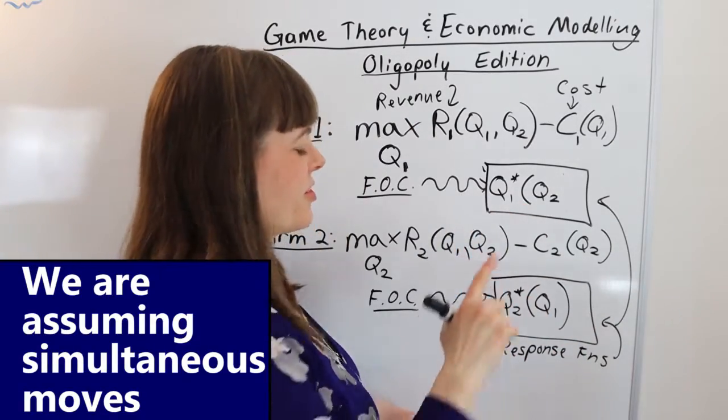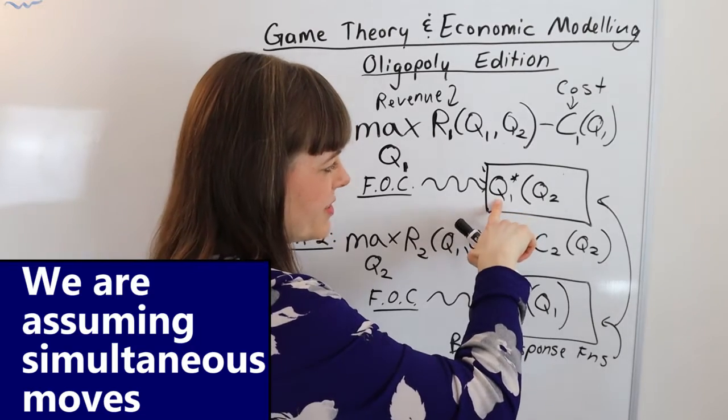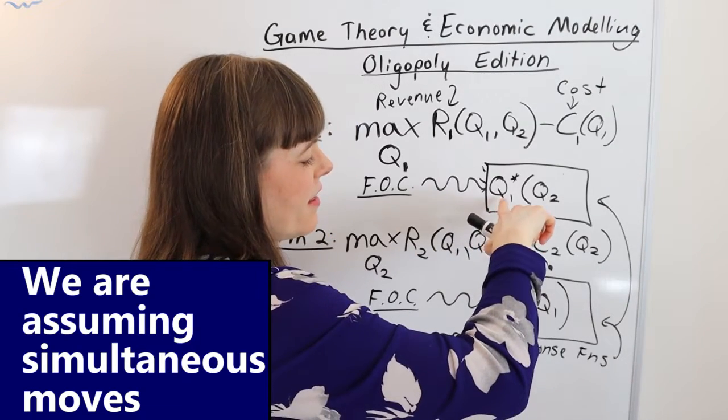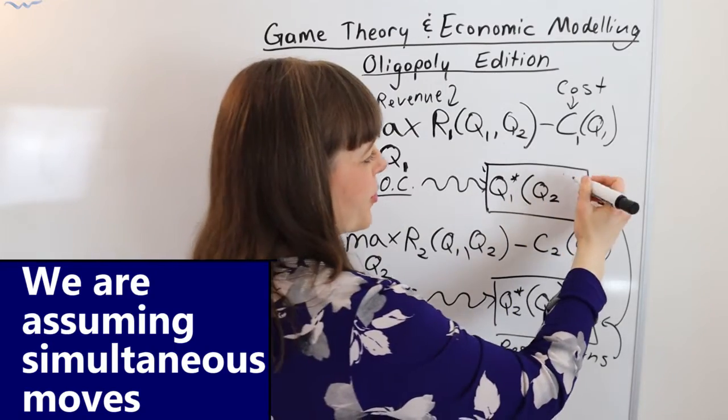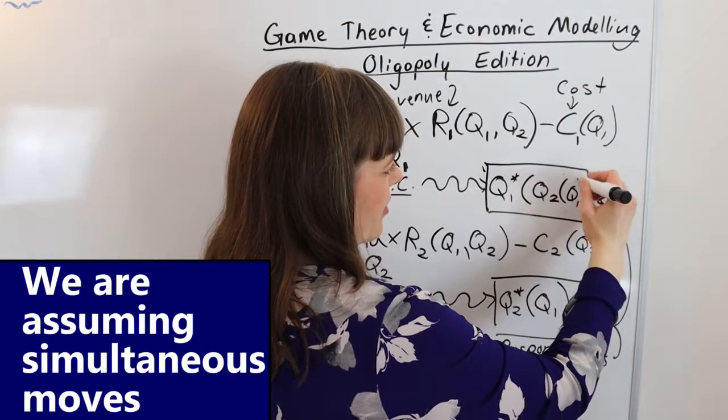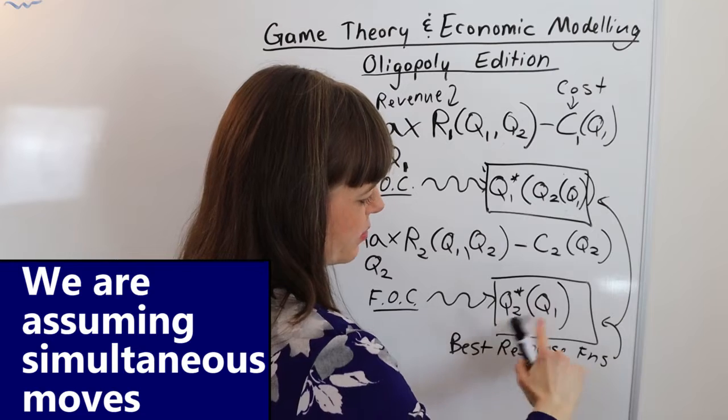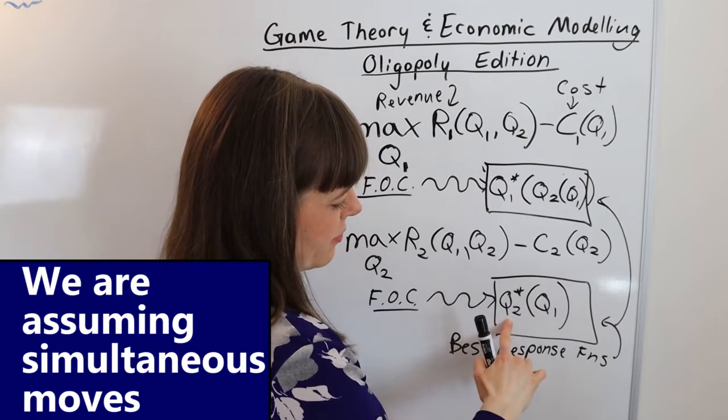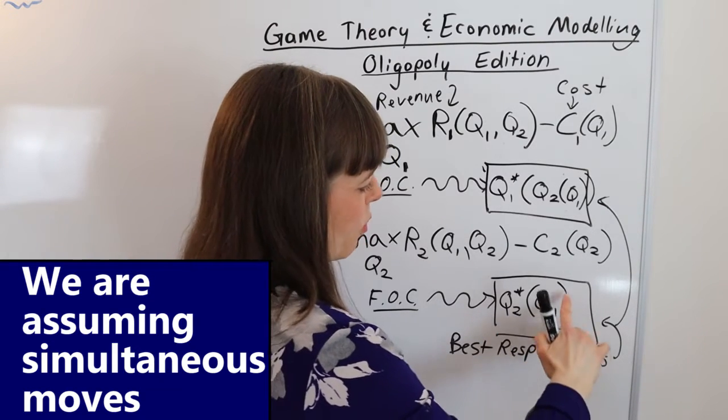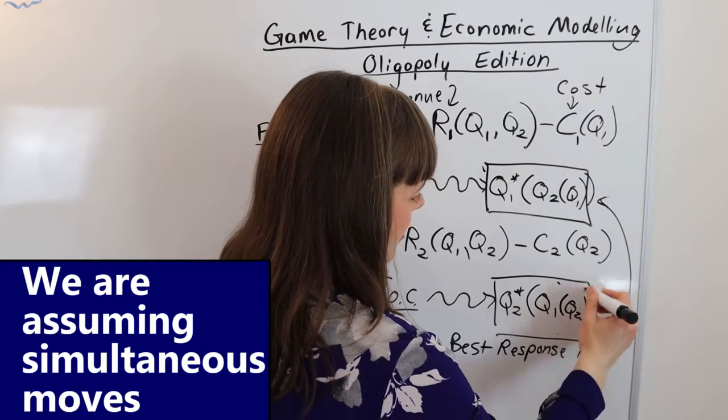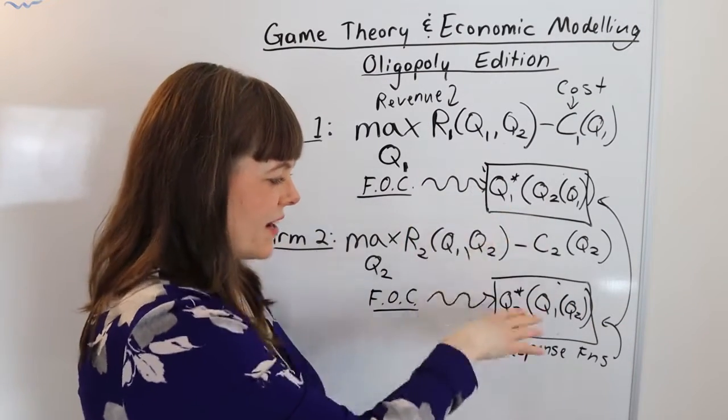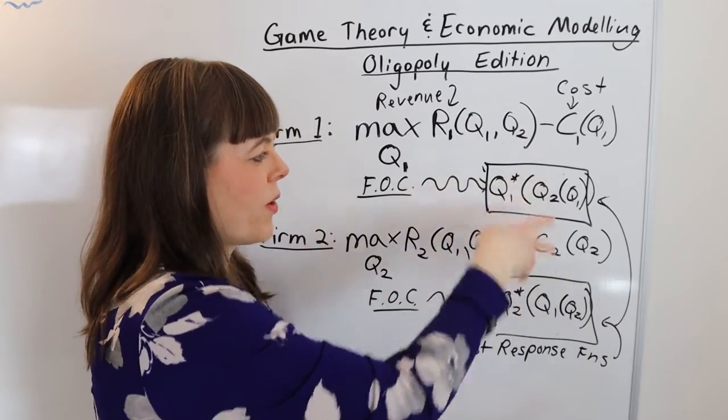Now the other thing we could do here is we could say because they're best response functions the optimal quantity for firm one depends on the quantity for firm two which also depends on the quantity that firm one chooses because we've already shown quantity firm two chooses depends on firm one. So I could add this extra layer in here and that seems kind of counterintuitive but what it means is both firms are creating a best response to each other and that's Nash equilibrium.